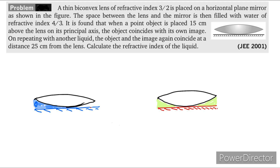A thin biconvex lens of refractive index 3/2 is placed on a horizontal plane mirror as shown in the figure. The space between the lens and the mirror is then filled with water of refractive index 4/3. It is found that when a point object is placed 15 cm above the lens on its principal axis, the object coincides with its own image. On repeating with another liquid, the object and image again coincide at a distance 25 cm from the lens. Calculate the refractive index of the liquid.